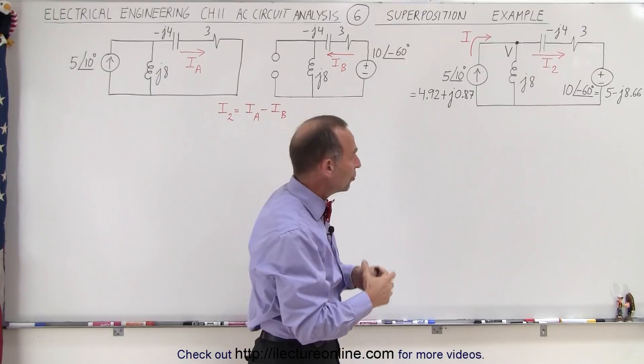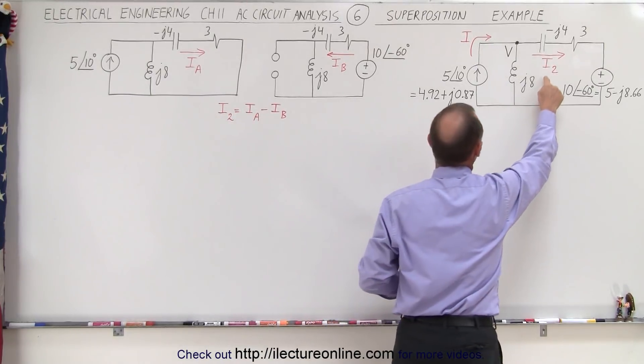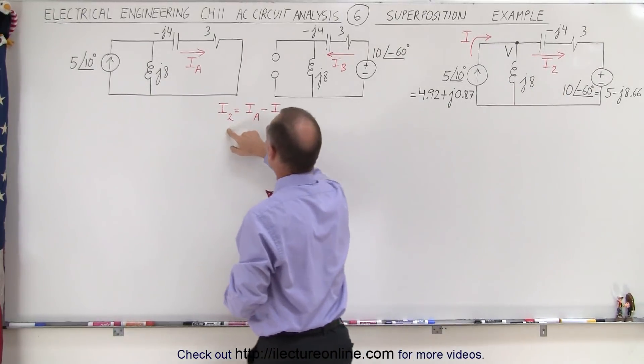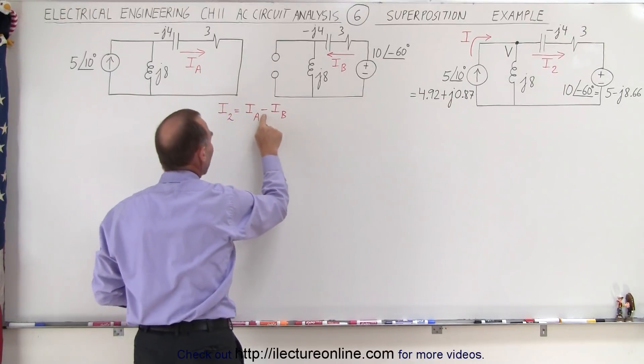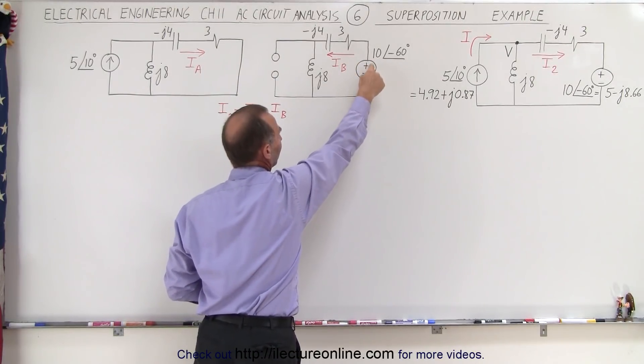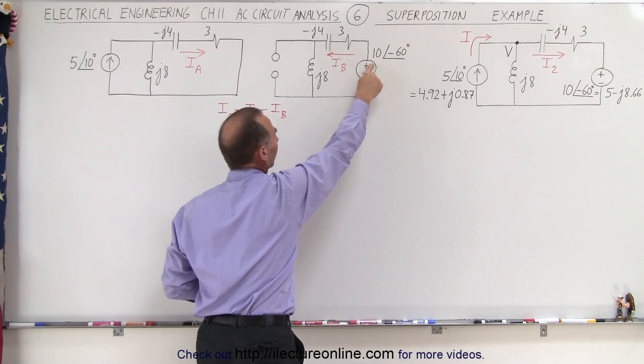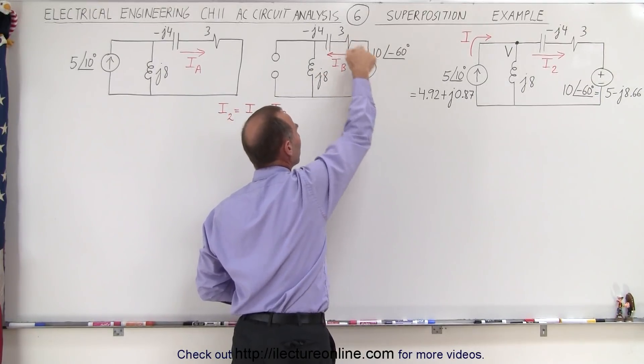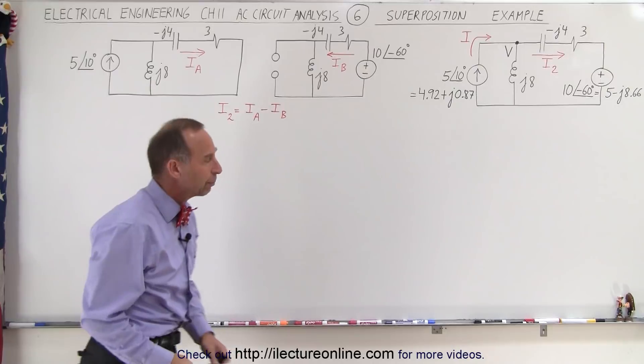Let's say in this case we're only looking for I2 to make it a little bit simpler. So I2 then will be equal to the current IA minus the current IB because we have the arrow IB in the opposite direction since this is the positive end of the voltage source. We assume that IB will be in this direction in that particular circuit.